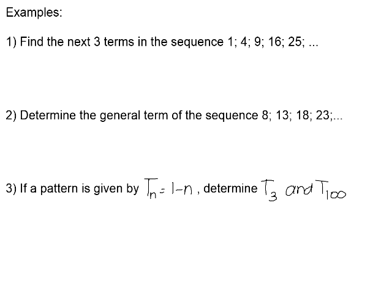Example: find the next 3 terms in the sequence 1, 4, 9, 16, 25. We can see those are the pattern of square numbers. With position numbers already placed, I need positions 6, 7, and 8. 6 squared is 36, 7 squared is 49, and 8 squared is 64.